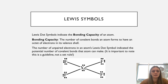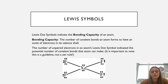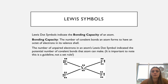Looking back at bromine, there was only one unbonded electron, so in general it will probably make one covalent bond to another atom. Hydrogen was the same way. In general, the number of unpaired electrons in the Lewis dot symbol will equal the number of covalent bonds, but it is important to remember there are exceptions to that rule.